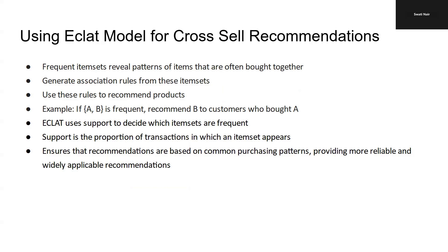Frequent item sets help identify patterns of items often purchased together, which can be used to recommend additional items to customers. For example, if items A and B are frequently bought together, we can recommend B to customers who purchased A. Eclat relies only on support to determine which item sets are frequent — support being the proportion of transactions in which an item set appears. This metric is preferred over confidence and lift because it ensures recommendations are based on common purchasing patterns, making them more reliable and widely applicable.